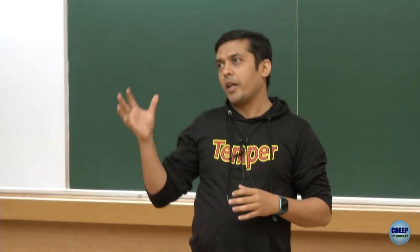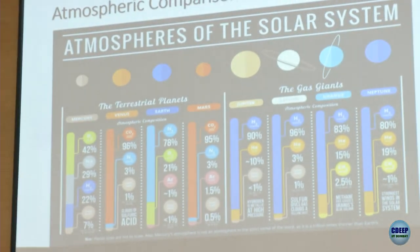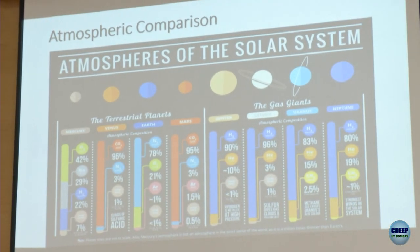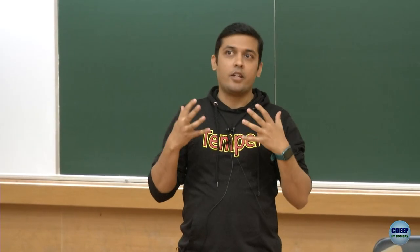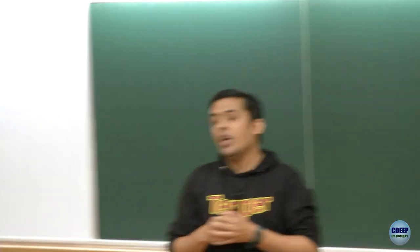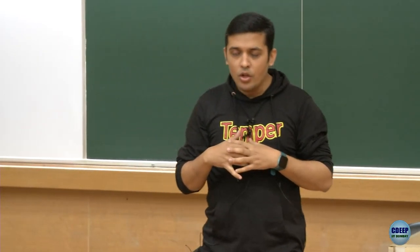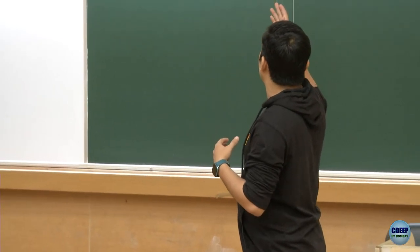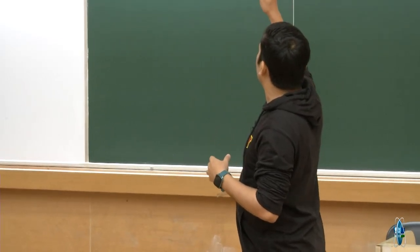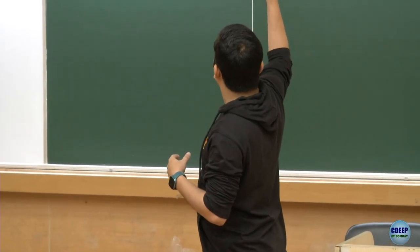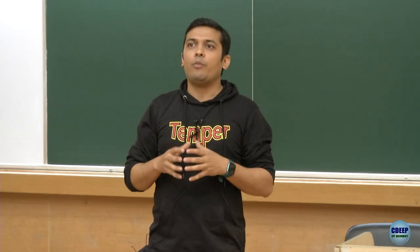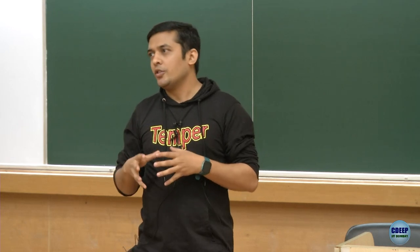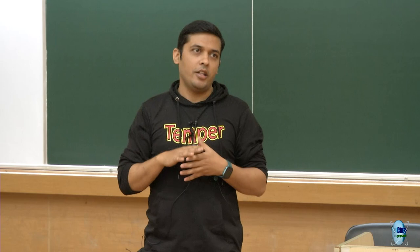Here is a chart depicting the comparison among the atmospheres of different planets in our solar system. Pluto is not there because it is considered a dwarf planet. We can see a difference between the gas giants and terrestrial planets on the left. Terrestrial planets Venus and Mars have atmospheres primarily made of carbon dioxide — about 95 to 96 percent.